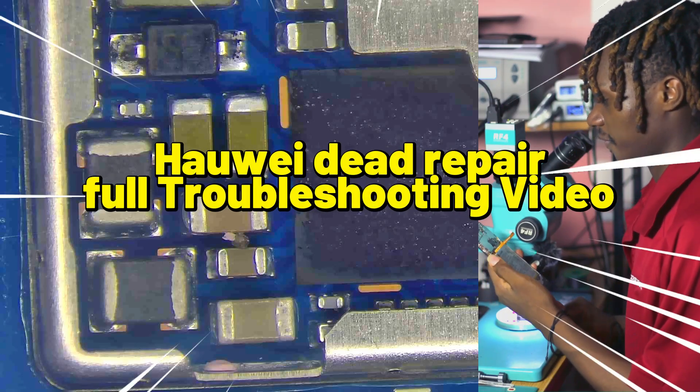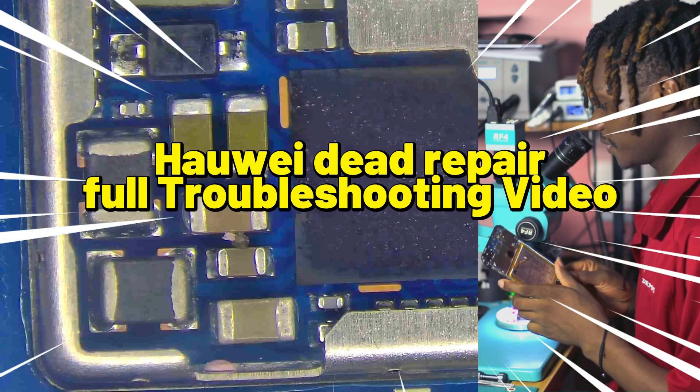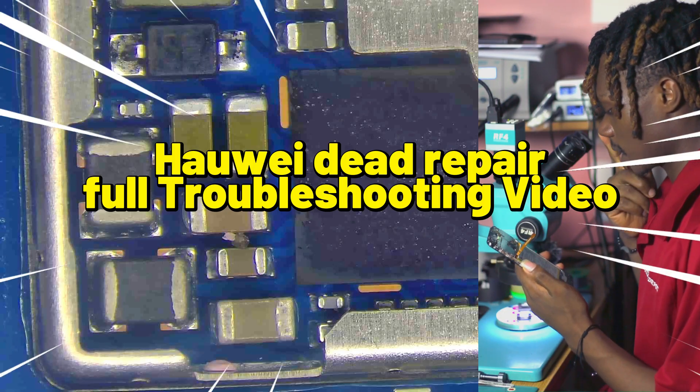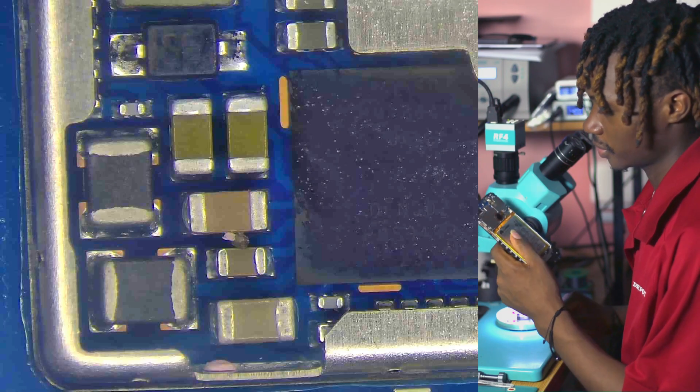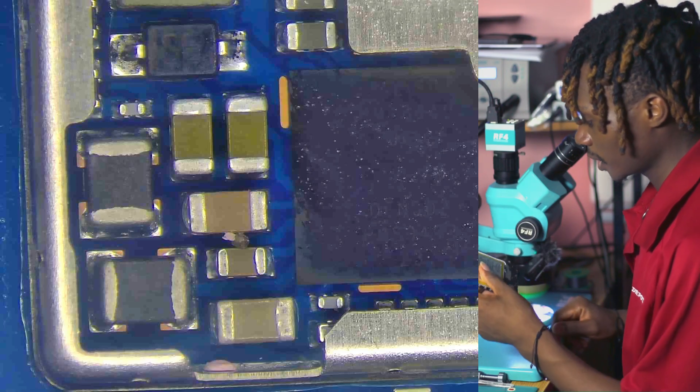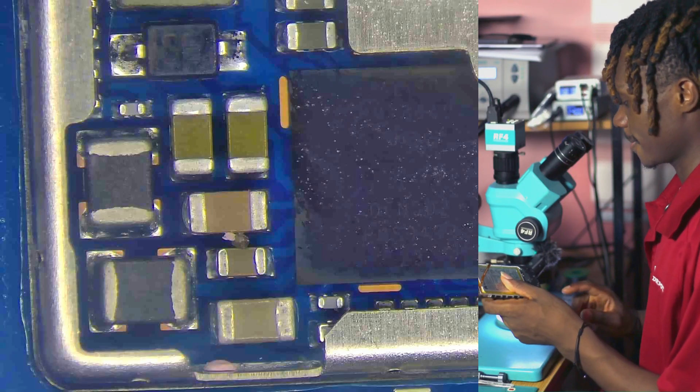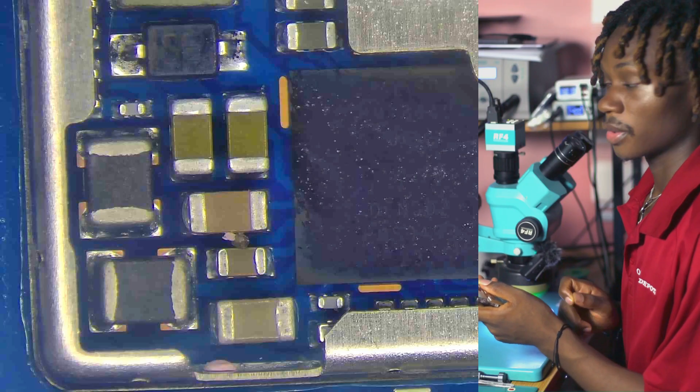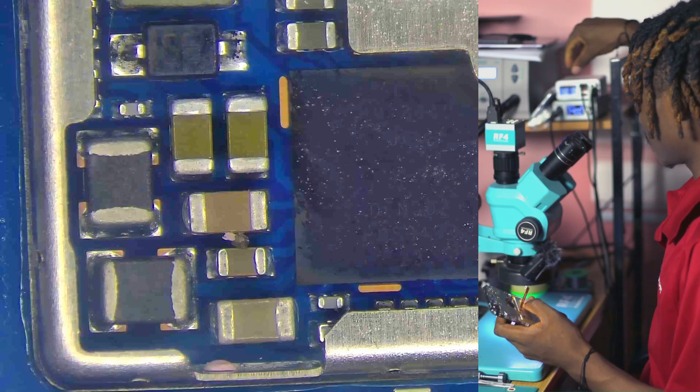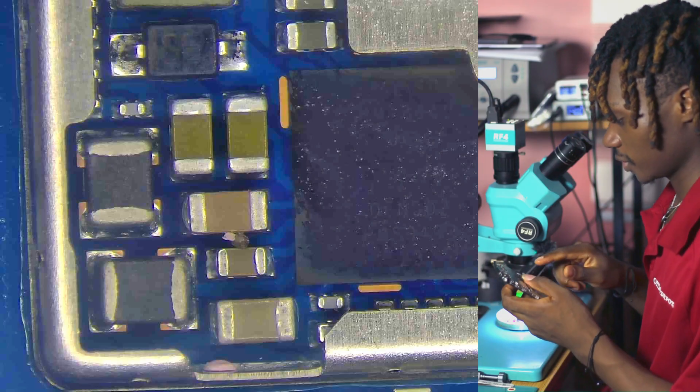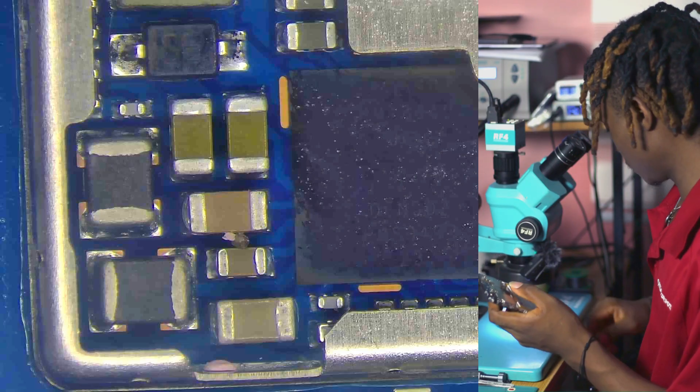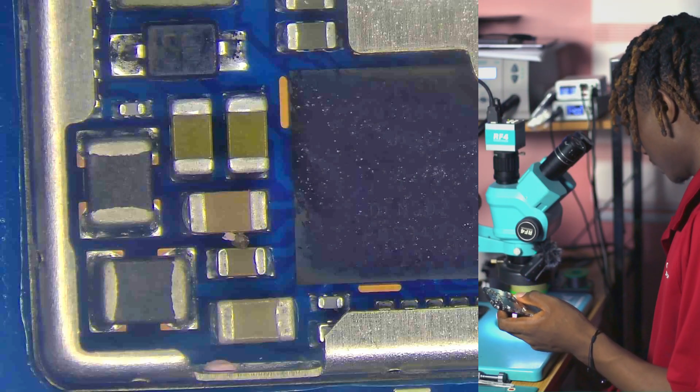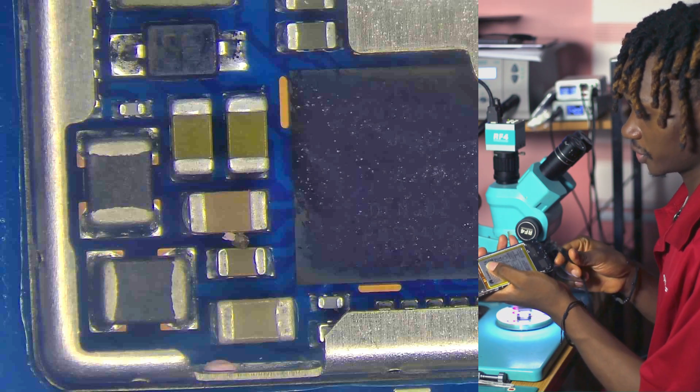We have this Huawei mobile PCB received from another shop. The phone is not powering on and I dismantled it already. We're going to connect it to our charger and see how the charging current behaves. I just plugged in the battery.